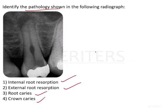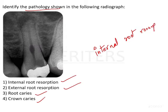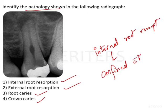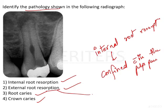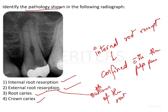Internal root resorption is confined within the pulp space, while external root resorption will be on the outlines and peripheries of the root. Caries appearances are also distinct. Here, you can see a bulb-shaped radiolucency that continues with the pulp channel, so the answer is internal root resorption.